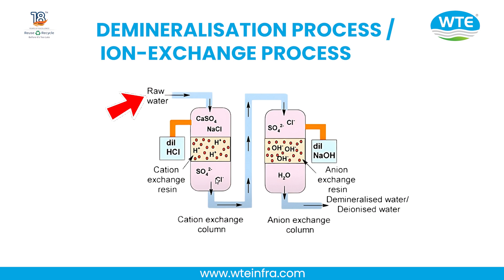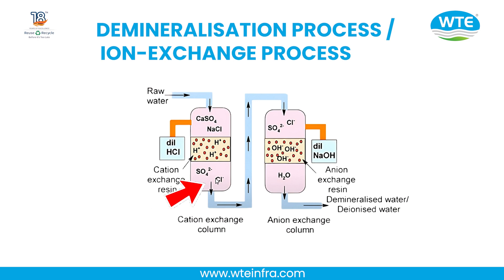For this example, let us consider that raw water contains calcium sulfate and NaCl. When this raw water is passed through the cation exchange resin, the H⁺ ions present in the cation exchange resin get exchanged with the calcium and sodium present in the water. The water coming out of this column is free from cations.